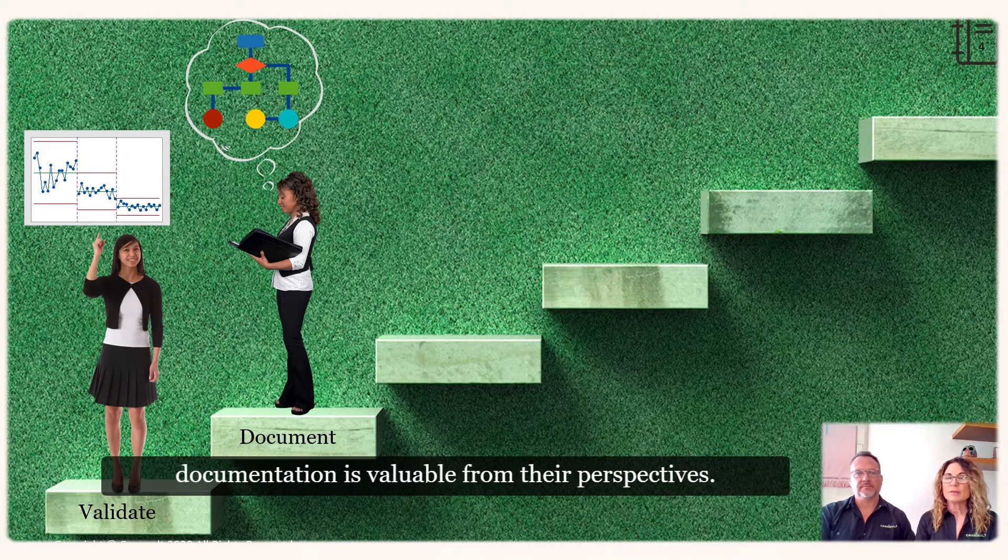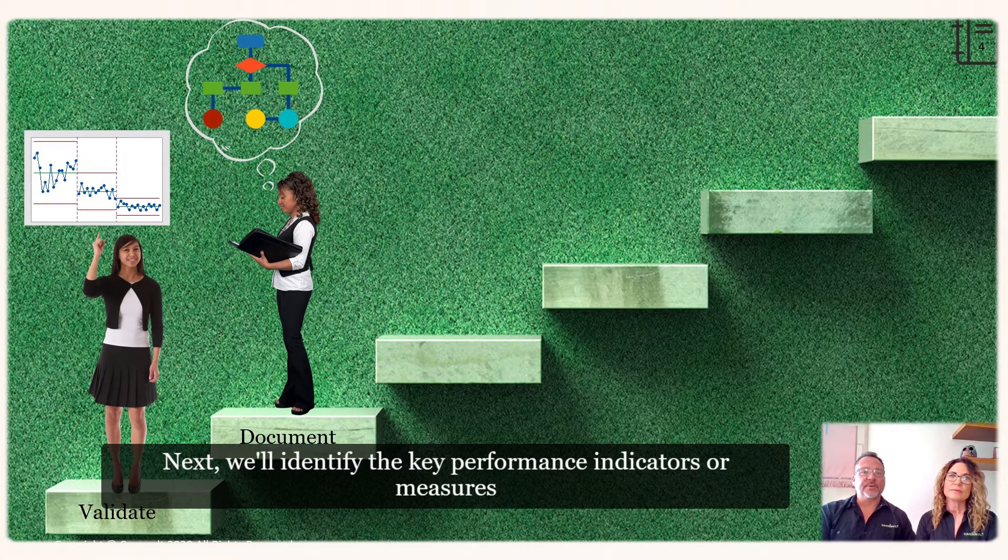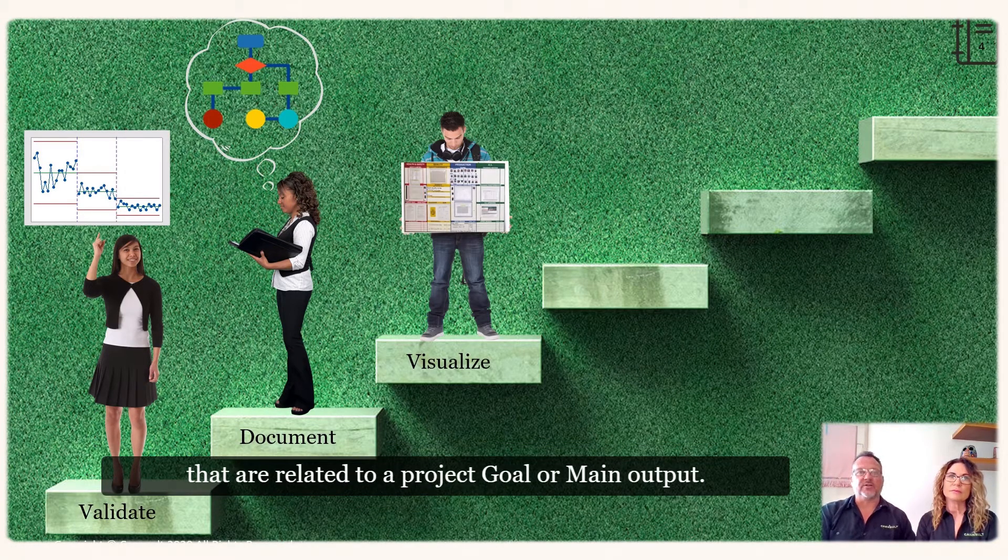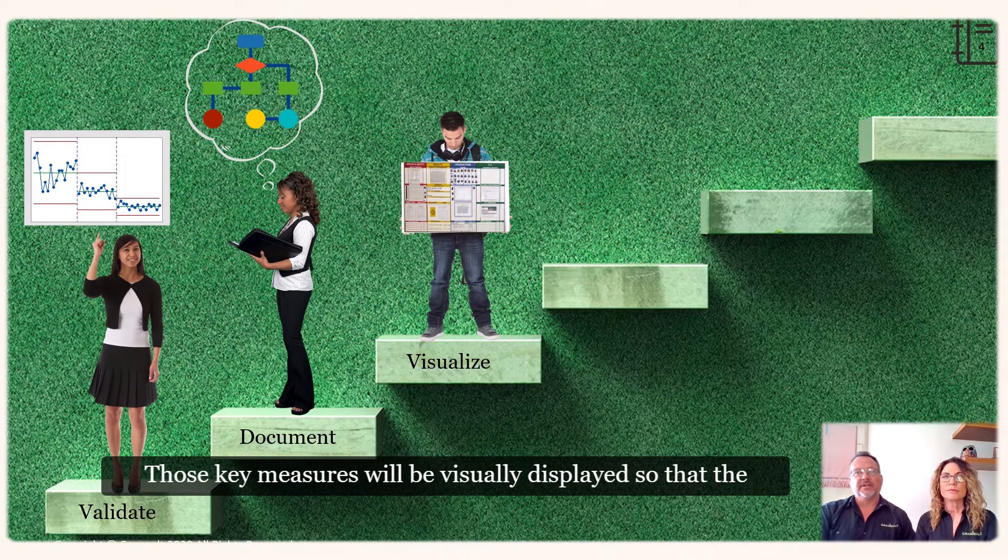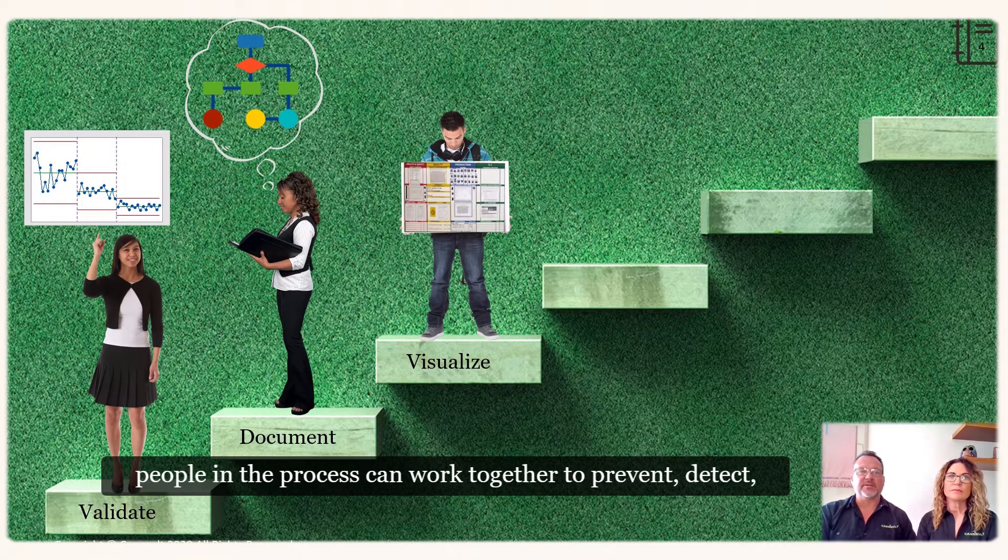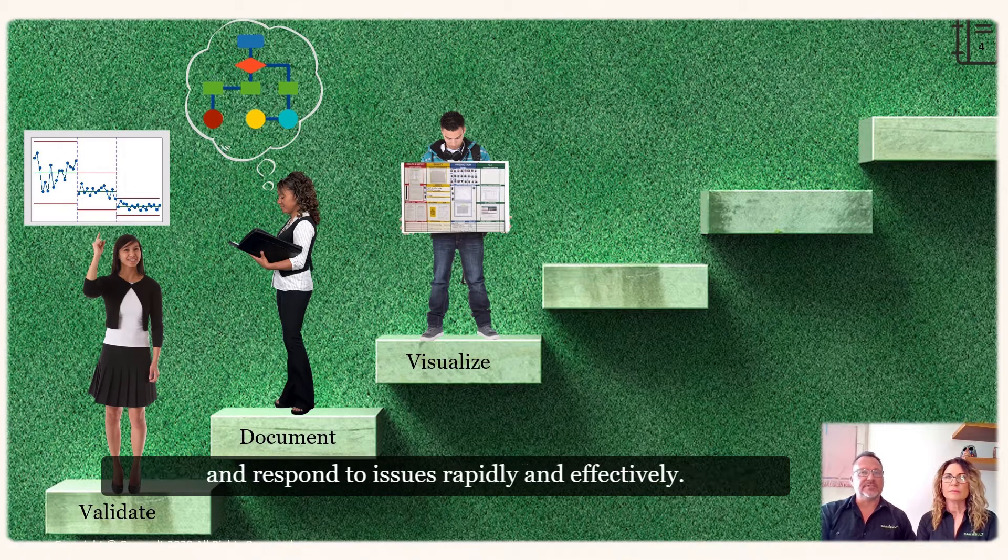Next, we'll identify the key performance indicators or measures that are related to our project goal or main output. Those key measures will be visually displayed so the people in the process can work together to prevent, detect, and respond to issues rapidly and effectively.